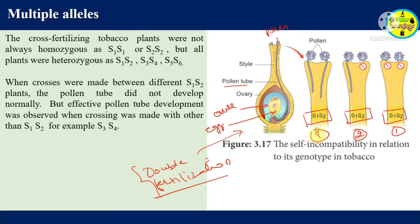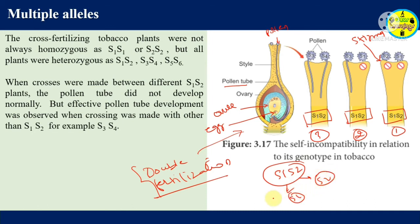Condition one: the stigma is S1S2. If pollen comes from the same plant — genetically S1S2 — then since pollen is haploid, each pollen carries either S1 or S2. Both alleles match the stigma, so pollen tube formation is blocked. There is no fertilization and no zygote is formed.